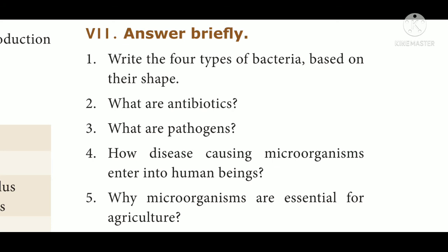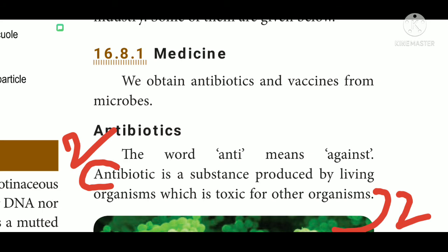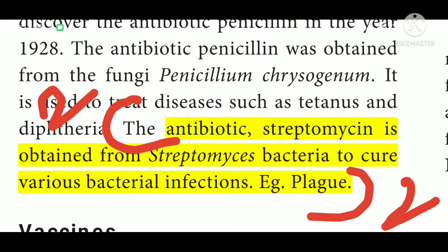Question 2: What are antibiotics? Answer: An antibiotic is a substance produced by living organisms which is toxic for other organisms. Antibiotic streptomycin is obtained from Streptomyces bacteria to cure various bacterial infections.